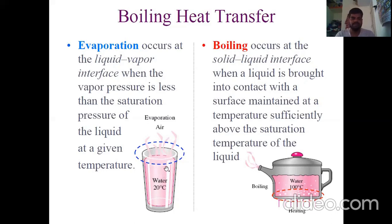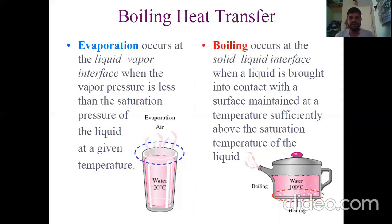For example, a glass of water at 20 degrees centigrade kept in the atmosphere: the liquid molecules at the free surface can escape because of evaporation. A very good example of evaporation is the water cycle — the free surface of liquid present in lakes, rivers, or the sea gets heated by solar energy and the upper surface is converted into vapor. This process is called evaporation, not boiling.